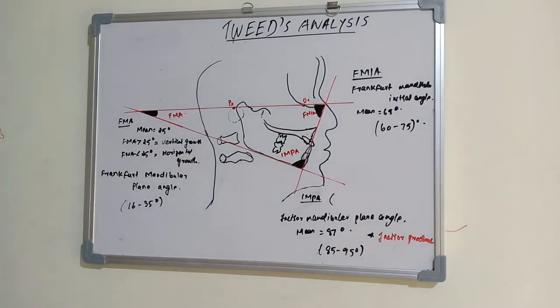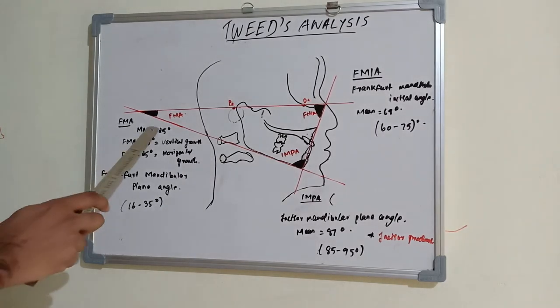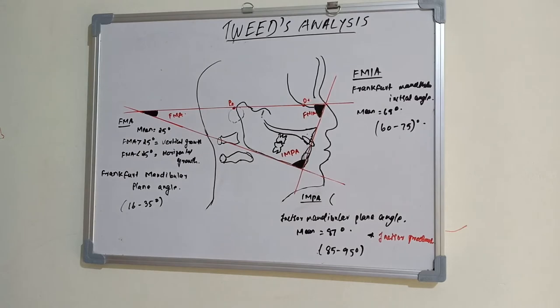Which indicates the direction of lower facial growth, both horizontally and vertically. So this angle indicates the direction of lower facial growth in both directions, horizontal and vertical direction. The mean value is 25 degrees.